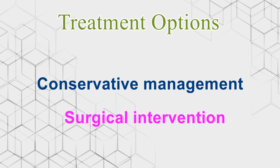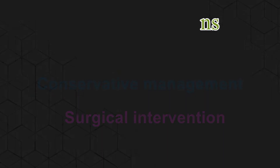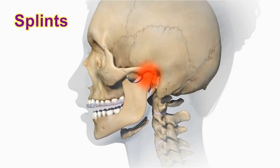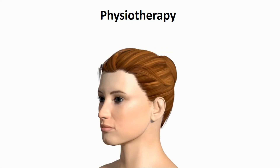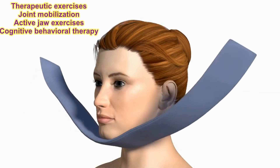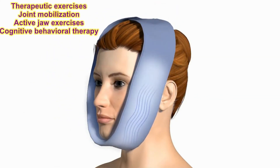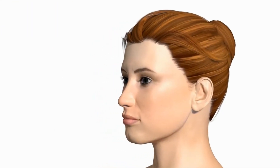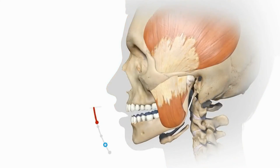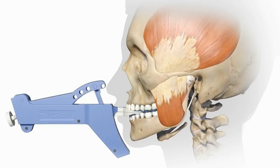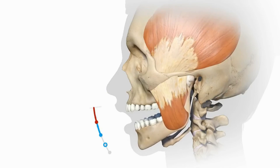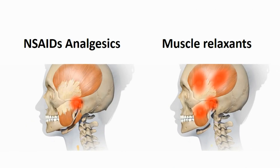Treatment options for TMJ disorders include conservative management or surgical intervention. Conservative management includes splinting using soft acrylic splints to prevent parafunctional habits or bruxism, which may be the cause of the TMJ disorder. Physiotherapy includes therapeutic exercises, joint mobilization of the TMJ and cervical spine, active jaw exercises and strengthening, and cognitive behavioral therapy. NSAIDs, analgesics, and muscle relaxants are also used to reduce pain.